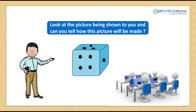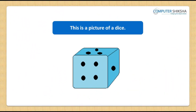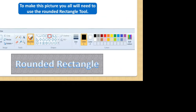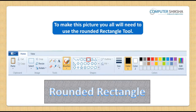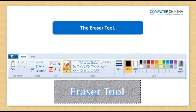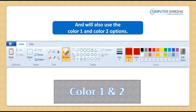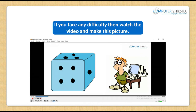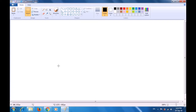Look at the picture being shown to you and let us know what it is. This is a picture of a dice. Can you tell how you will make this picture? To make this picture, you will need to use the rounded rectangle tool, the oval tool, the eraser tool, and you will also use the color 1 and color 2 options. Let us watch this video and learn how we can make use of the rounded rectangle tool to make this picture of a dice.